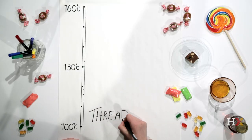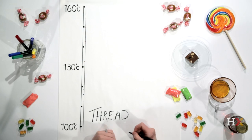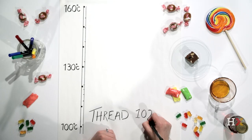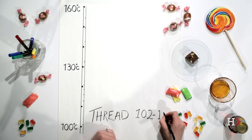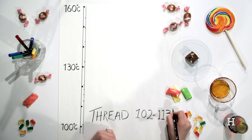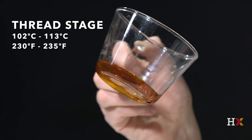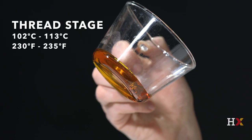The first stage is called the thread stage. The thread stage begins at the temperature 102 and goes all the way up to 113 degrees Celsius. When you take a spoonful of the heated sugar mixture at this temperature and drop it into cold water, it forms threads. Sugar heated to this temperature is good for making syrup.